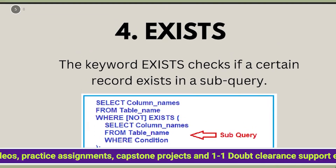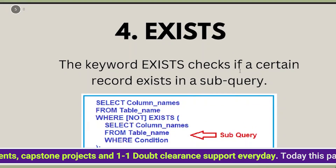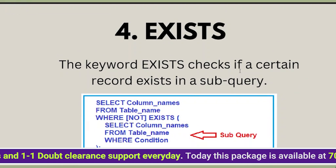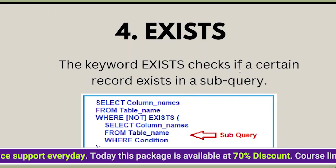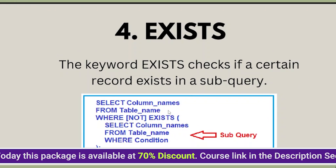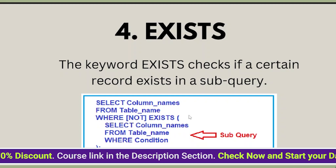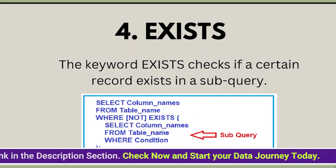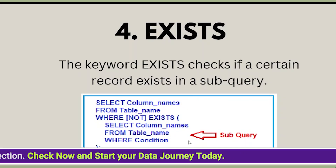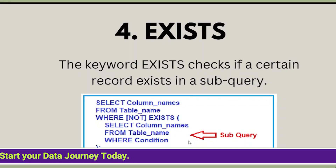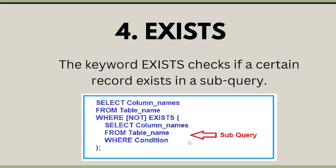Next we have the EXISTS keyword. The EXISTS keyword checks if a certain record exists in a subquery. You use it as: SELECT column names FROM table name WHERE NOT EXISTS (SELECT column names FROM table name WHERE condition). It checks whether a particular value is present in the subquery or not.